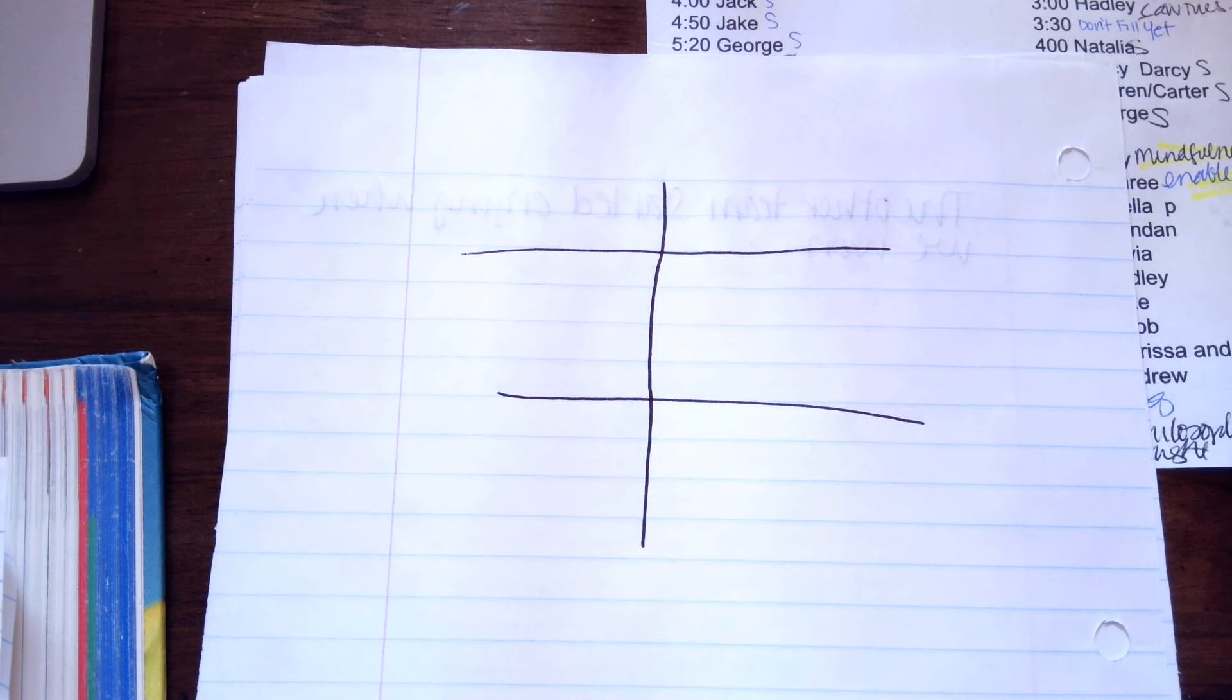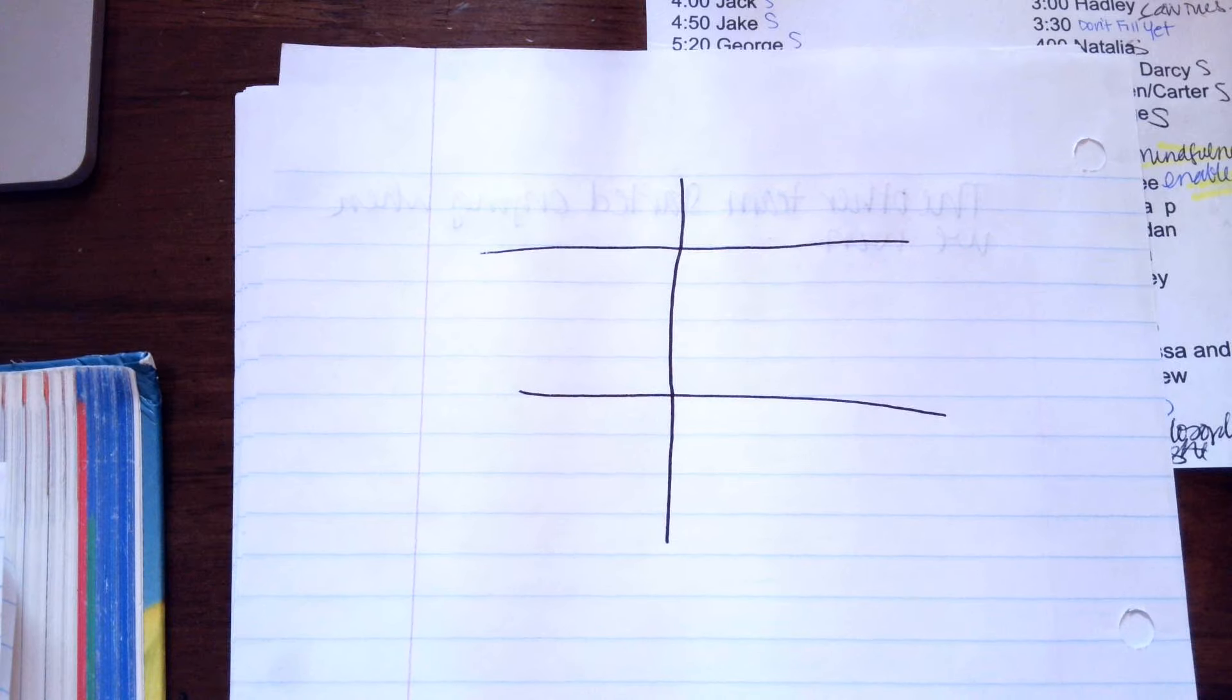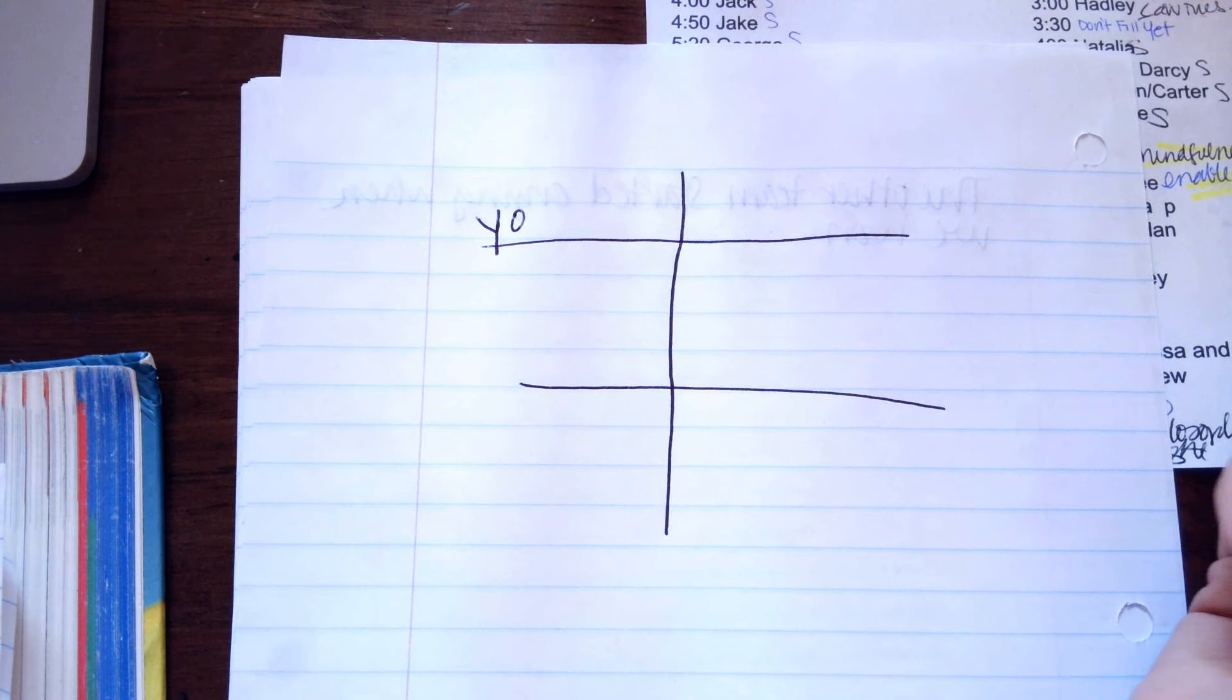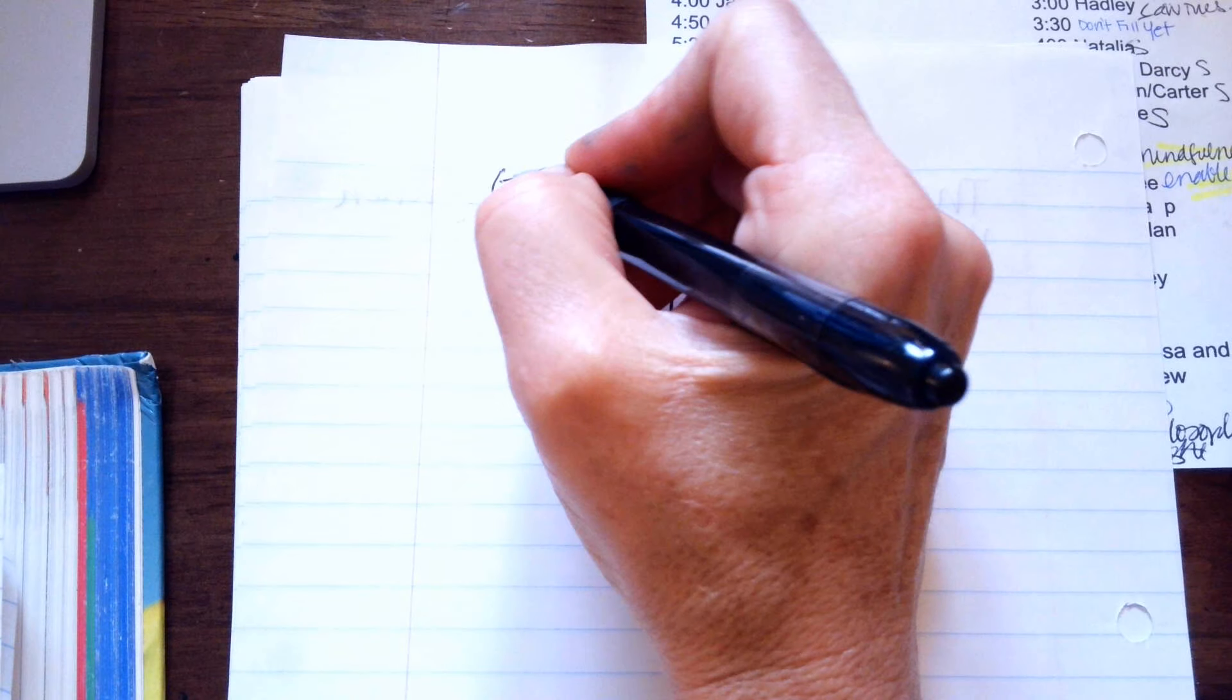So this is how to conjugate a verb in Spanish. So this right here is your yo, which is also what it means is I.